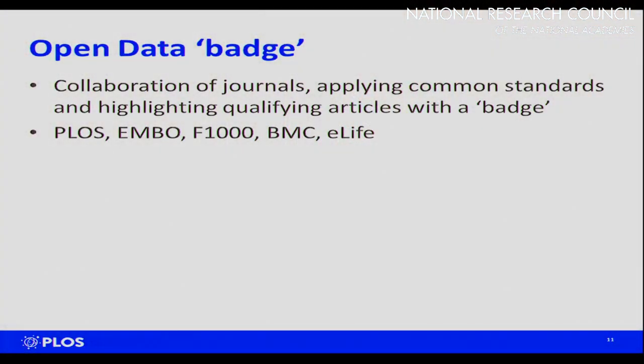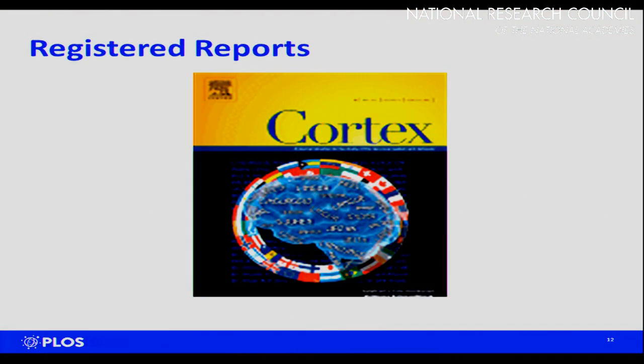We're working with other journals. The EMBO Journal is exemplary in its data accessibility, and we're also working with F1000, Biomed Central, and eLife — all journals who take this issue very seriously. Together we're thinking about coming up with some kind of badge that can go on papers showing compliance with higher standards of data availability. Registered reports — Galen mentioned this earlier — is something we're interested in. The Cortex journal, an Elsevier journal, were the first to do this properly. The editor who ran it, Chris Chambers, is also one of our academic editors and is very keen to implement it on PLOS One.